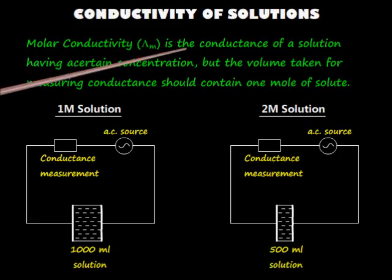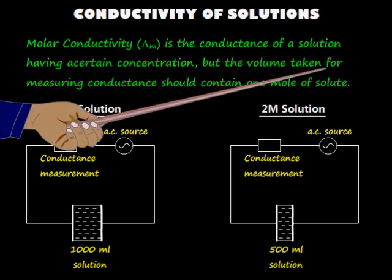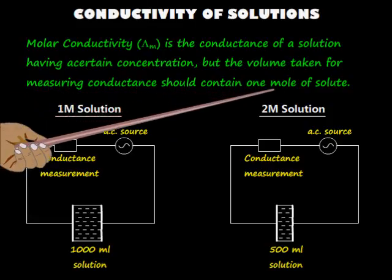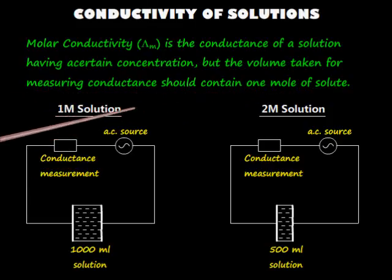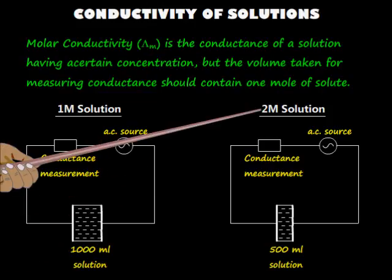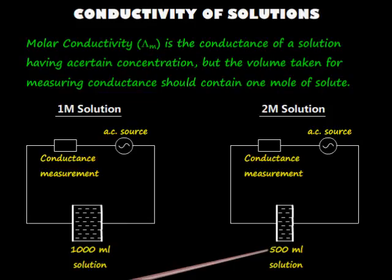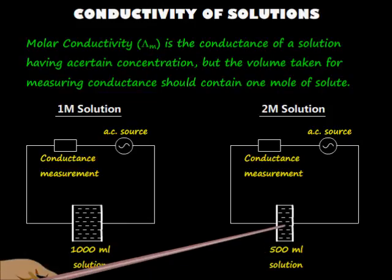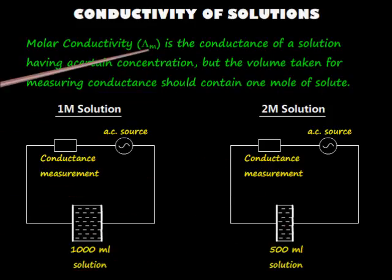Molar conductivity is the conductance of a solution having a certain concentration, but the volume taken for measuring conductance should contain 1 mole of solute. So, if a 1 molar concentration solution is taken, then conductance of 1000 ml should be measured. And if a 2 molar concentration solution is taken, then conductance of 500 ml solution should be measured, because 500 ml of 2 molar solution contains 1 mole of solute. This molar conductivity is denoted by lambda m.